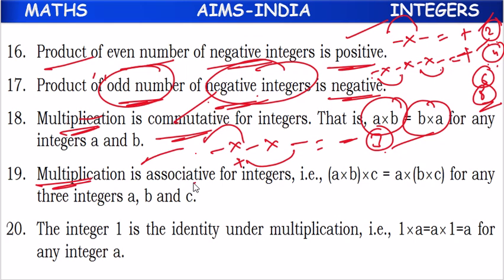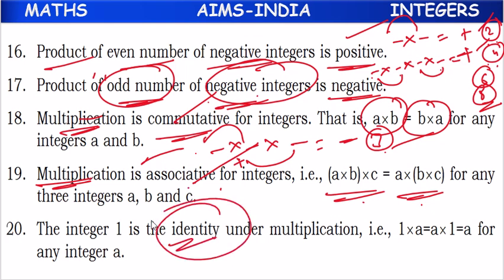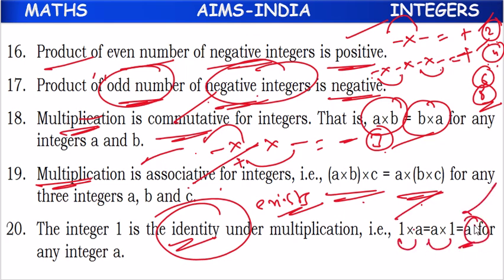Multiplication is also associative: (a times b) times c equals a times (b times c). It is also associative. In multiplication, an identity element also exists, which is 1. If you multiply a with 1 or 1 with a, the answer will be a only.